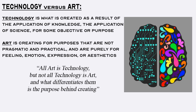Therefore, all art is technology — that is to say, all art is created by using knowledge about the natural world — but not all technology is art. What distinguishes and separates art from technology is the intent, purpose, and reason for why it is created. In order to purposefully create anything, for any reason, you must have knowledge about the natural world. You must have science.